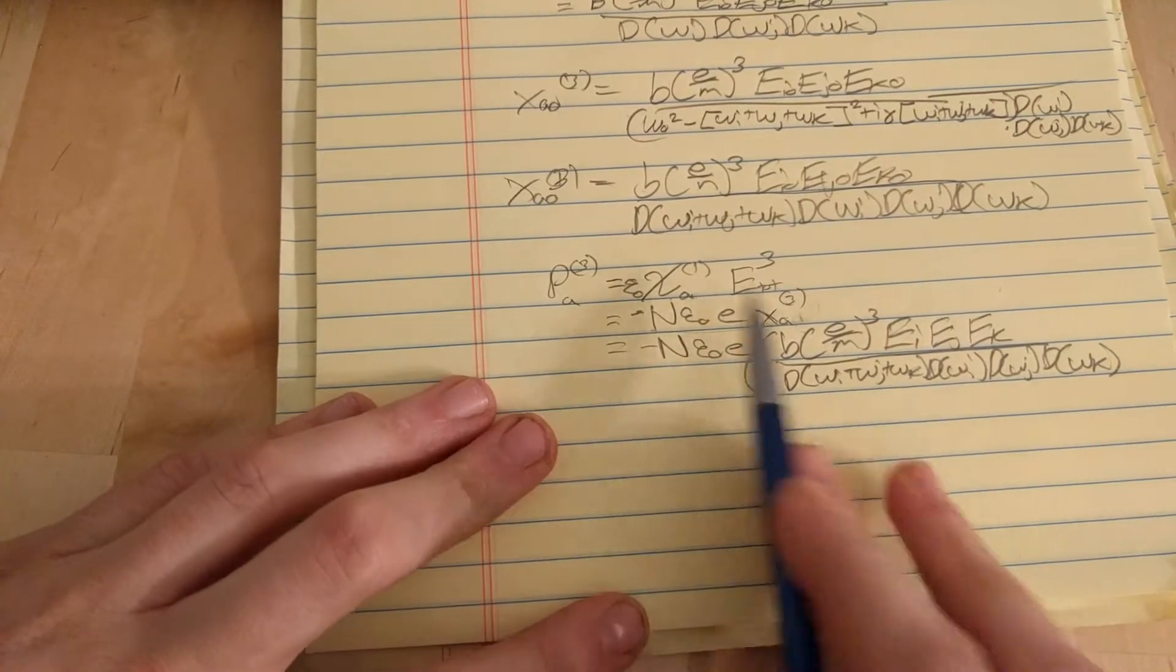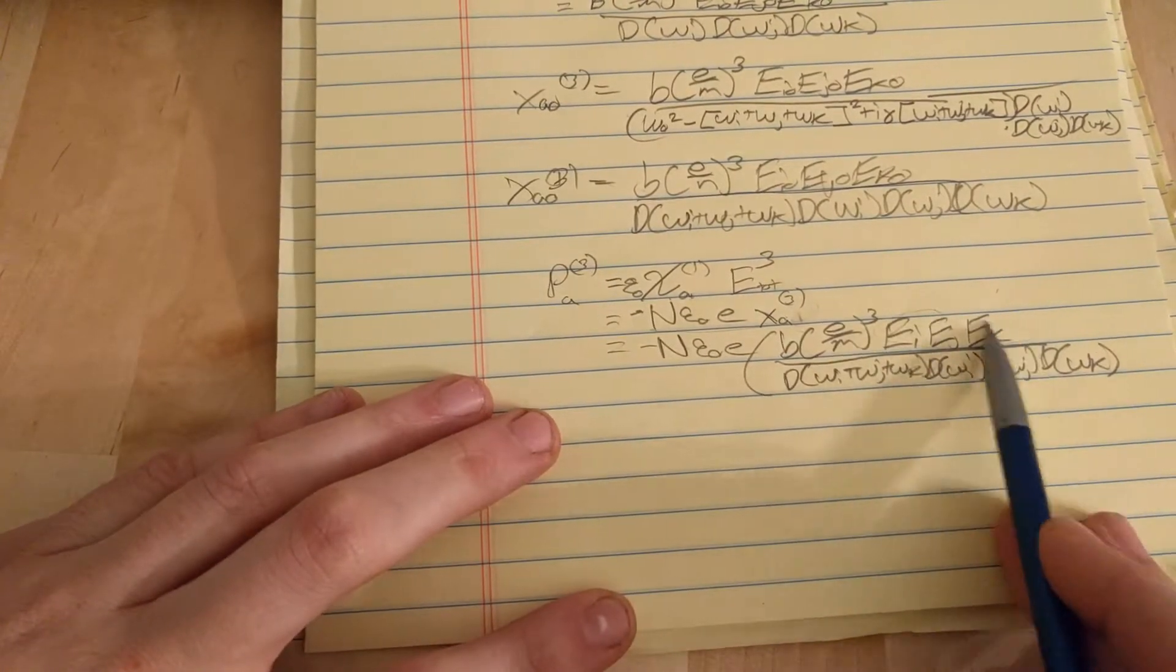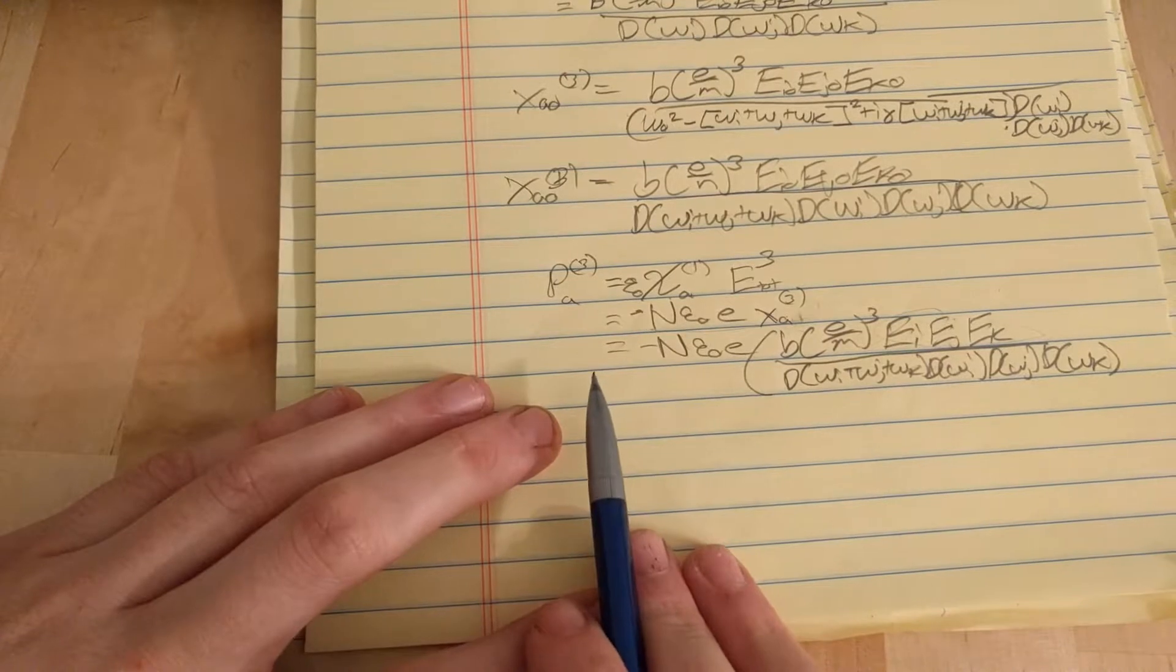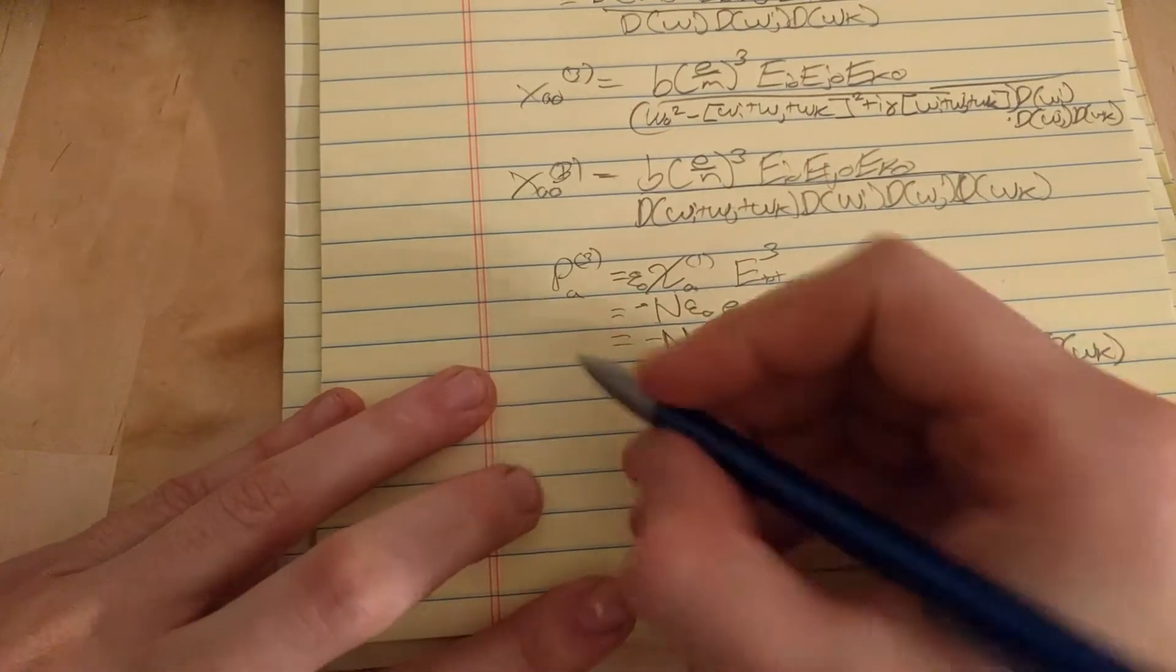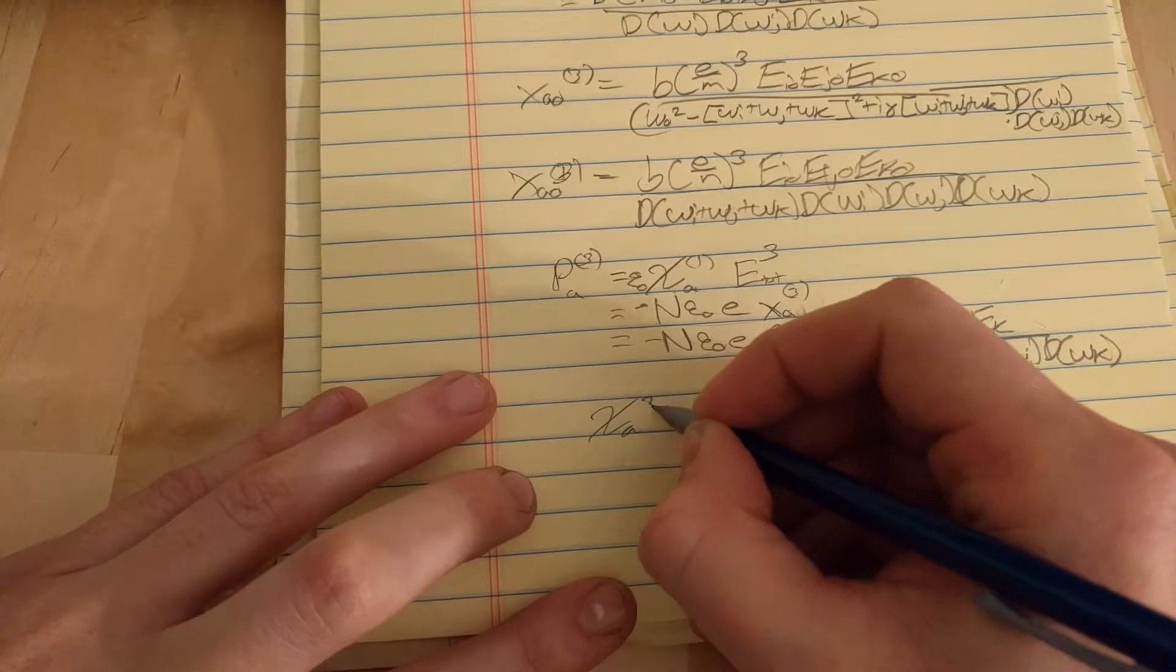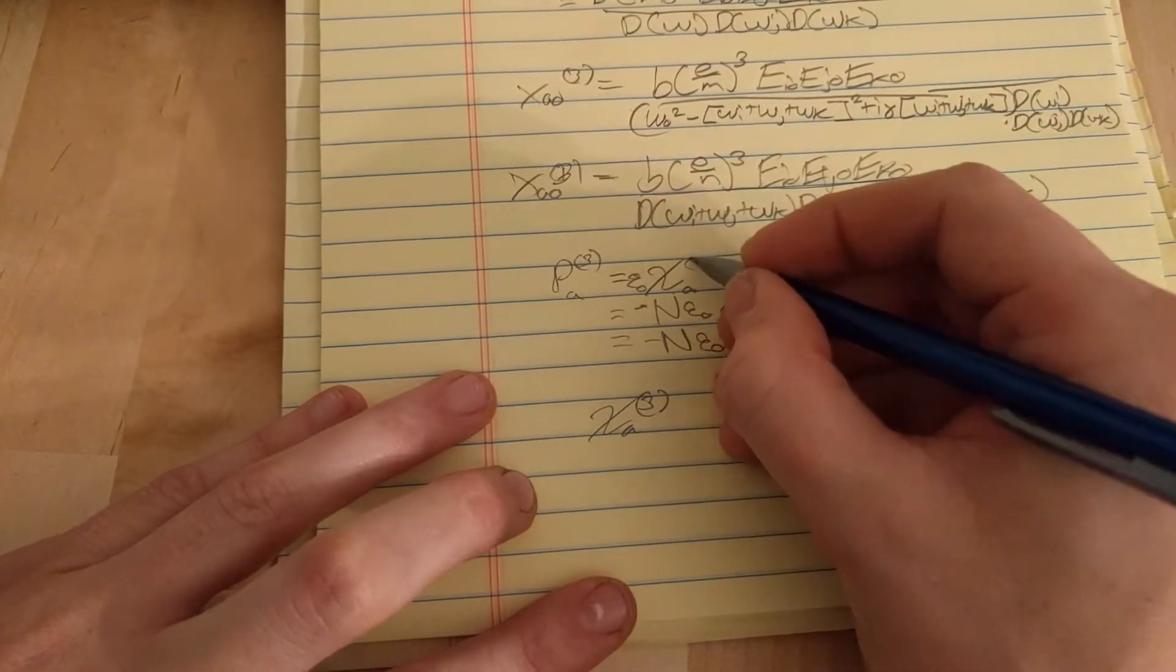Okay, and now we compare this part to this part. Well, this part just corresponds to the total electric field cubed, so, therefore, chi must equal this.